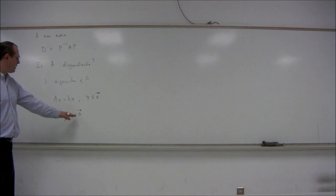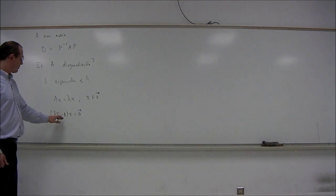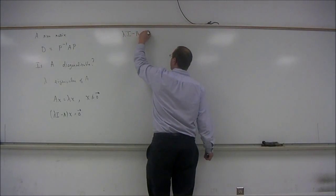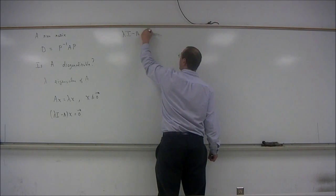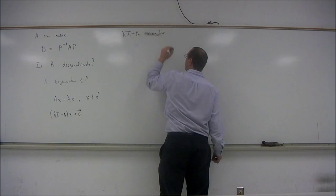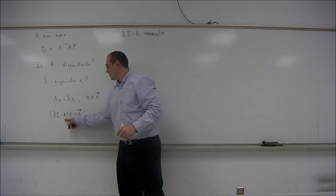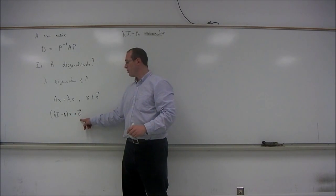This is equivalent to saying that lambda I minus A times X is equal to the zero vector. So to determine if lambda is an eigenvalue of the matrix A, we want the matrix lambda I minus A to be singular. We do not want it to have an inverse. If this matrix does not have an inverse, then there will be a non-trivial solution to the homogeneous system.